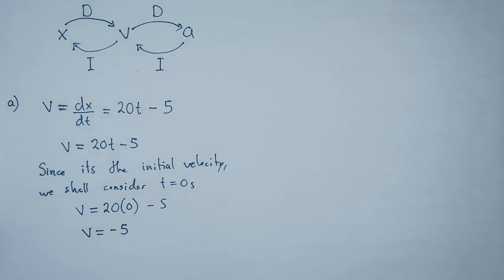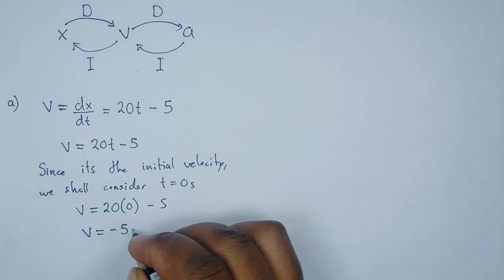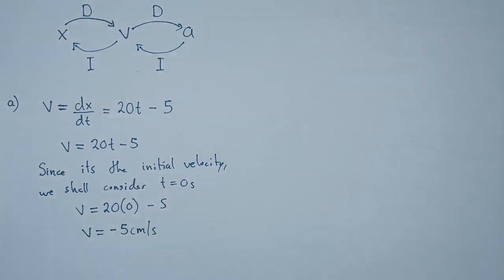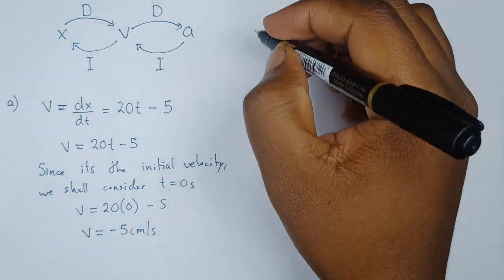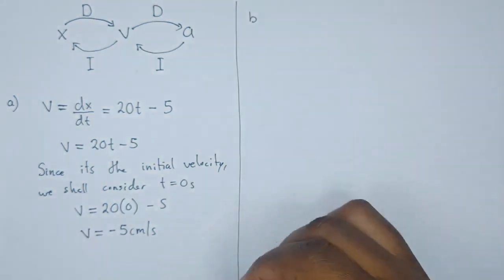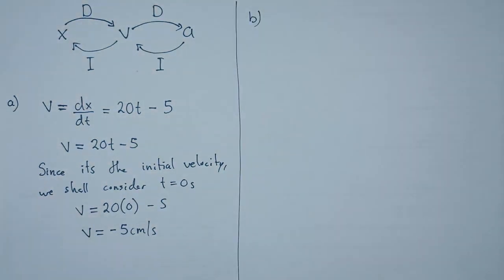Now that we have the expression for velocity, the result is negative 5 centimeters per second. The reason it's negative is because this object was going to the left, in the leftward direction — that's why the velocity is negative. Let's consider the next question: find the maximum distance the body moves to the left of the origin.